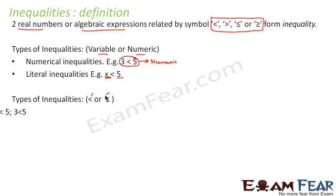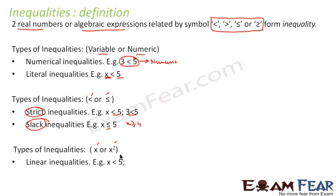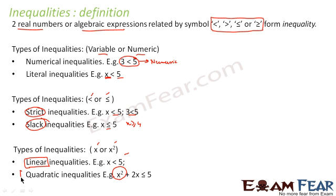Inequalities are also classified based on the symbol used. When we use strictly greater than or less than — for example, x is greater than 5 — it is called strict inequality. When we use greater than or equal to, or less than or equal to, it is called slack inequality. Additionally, if the inequality involves only x, it is linear; if it involves x squared, it is quadratic.